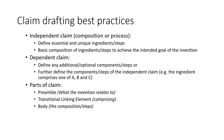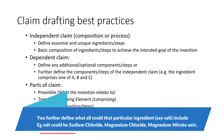I will briefly discuss the claim drafting best practices. An independent claim, specifically for a chemical type of invention, consists of a composition and/or a process used for making that particular composition. The independent claim needs to define the essential and unique ingredients in the case of a composition, and the essential and unique steps in the case of a process. Then you have one or more dependent claims wherein you define any additional or optional components or steps, or further define the components provided in the independent claim — for example, specifying that a particular ingredient could be one of A, B, or C.